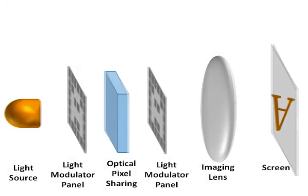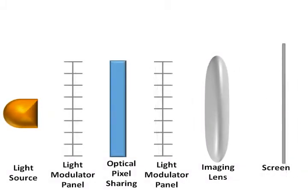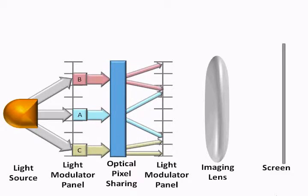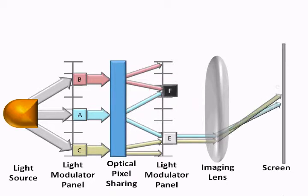For simplicity, we explain the design using 1D illustrations and for C equals 2. For each pixel of the first light modulator panel, the optical pixel sharing unit creates C-squared smallest copies of the pixel, each scaled down in size by a factor C in each dimension. These smaller pixels are focused at different locations on the second light modulator panel without any overlap with the other copies. Each pixel of the second panel will pass or block C-squared smaller pixels, which then go through an imaging lens to create the final image.